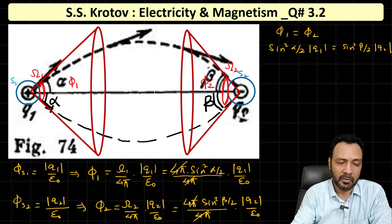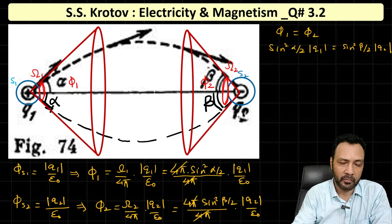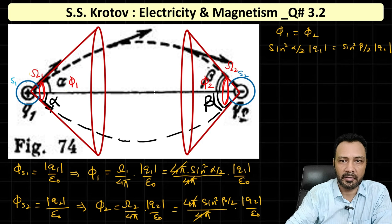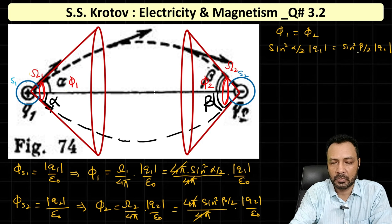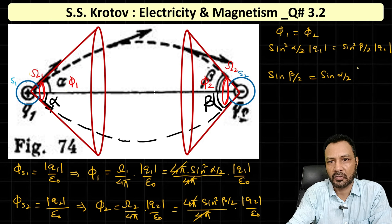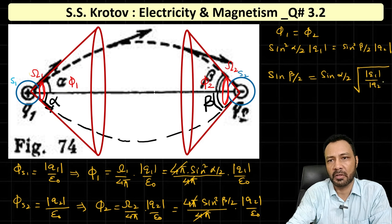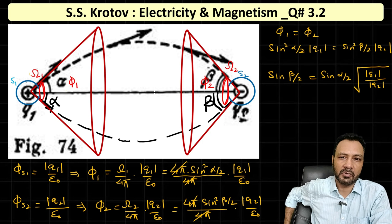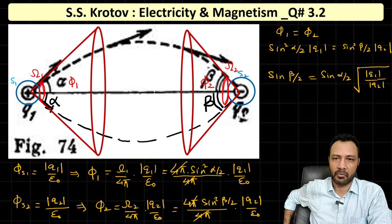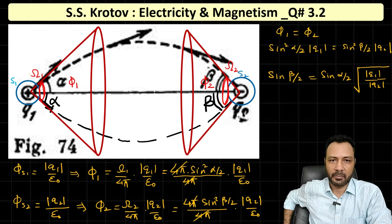Given the charges, we can find beta if we know alpha. From sin²(β/2) · |q2| = sin²(α/2) · |q1|, we get sin(β/2) = sin(α/2) · √(|q1|/|q2|). Therefore, the answer is: β = 2 sin⁻¹[ sin(α/2) · √(|q1|/|q2|) ]. That is our final answer. Thank you.